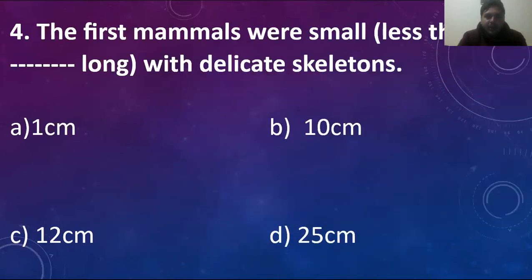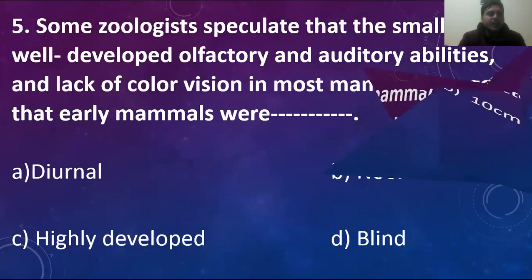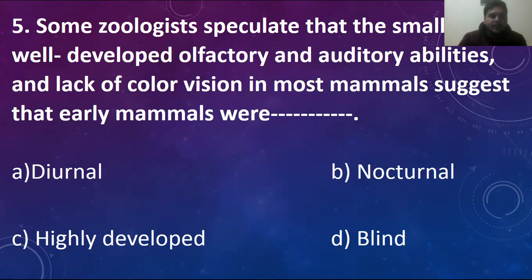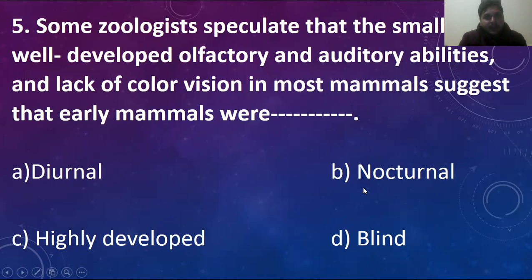MCQ number four: the first mammals were small — less than blank long with a delicate skeleton. Almost the first mammal was very small in size, about 10 cm. MCQ number five: small size, well-developed olfactory and auditory abilities, and lack of color vision in most mammals suggested early mammals were nocturnal. Due to the absence of color vision, they had nocturnal behavior, meaning they were active during the night time.